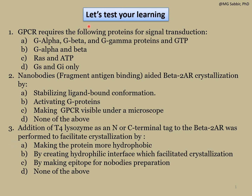Let's solve some multiple choice questions to test your learning. Question number one: GPCR requires the following proteins for signal transduction. Option A: G alpha, G beta, and G gamma proteins and GTP.